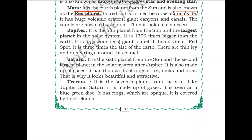Jupiter is the fifth planet from the sun and the largest planet in the solar system — it is 1,300 times bigger than the Earth. It is a gaseous giant planet and has a Great Red Spot, which is a storm three times bigger than the size of the Earth. Jupiter also has thin icy and dusty rings.